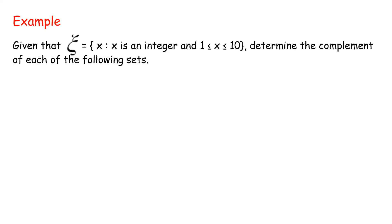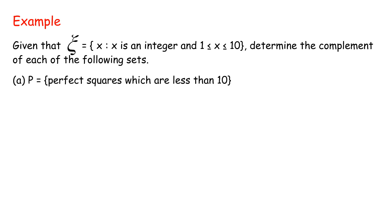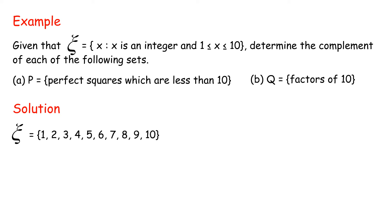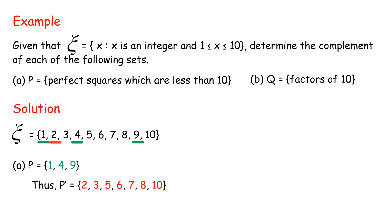Example: given that Universal Set = {x | x is an integer and 1 ≤ x ≤ 10}, determine the complement of each of the following sets. A: P = {perfect squares which are less than 10}. B: Q = {factors of 10}. Universal Set = {1, 2, 3, 4, 5, 6, 7, 8, 9, 10}. A: P = {1, 4, 9}, thus the complement of P, P' = {2, 3, 5, 6, 7, 8, 10}.